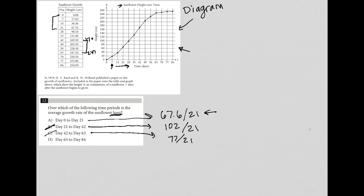Choice D is 63 to 84. So 63 to 84. Oh, that's very small, right? 247 to 254. That's only like 7 out of the 21. So that's going to be our answer. Choice D.